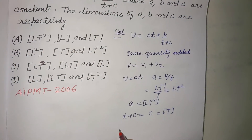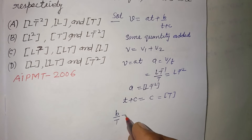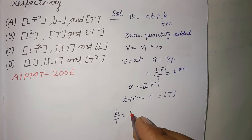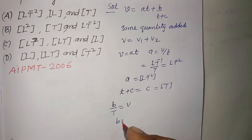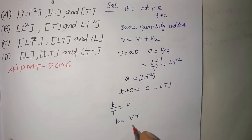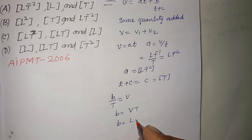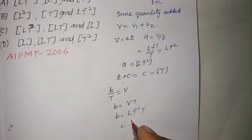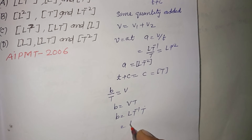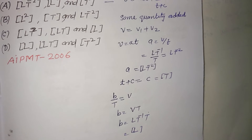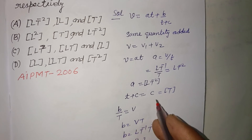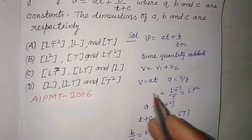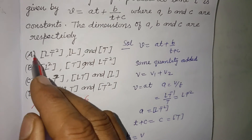Now b over t is equal to velocity v, so b equals v times t. Since v is LT⁻¹ and t is T, the dimension of b is L. So: dimension of b is L, c is T, and a is LT⁻².